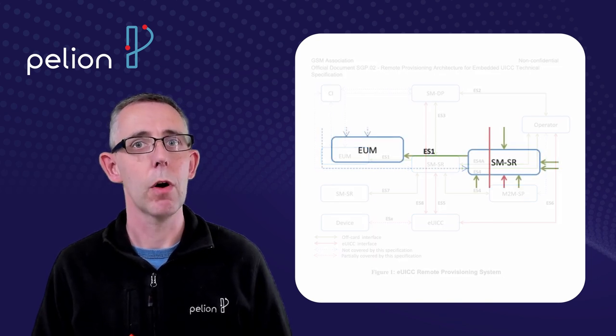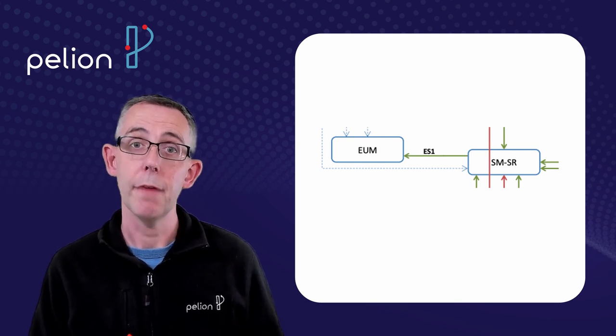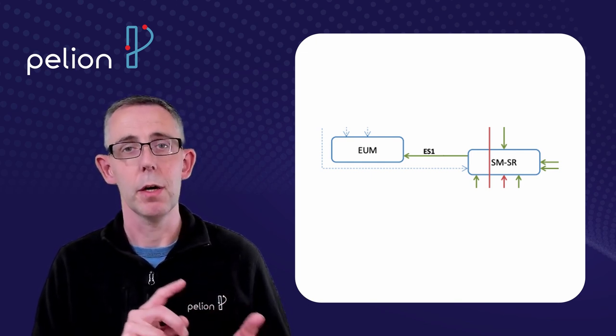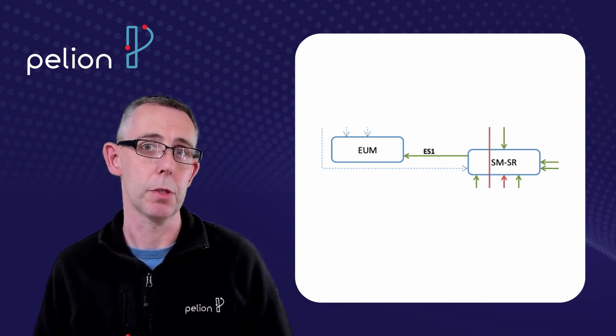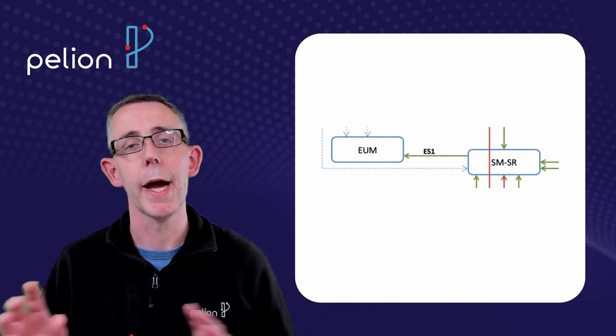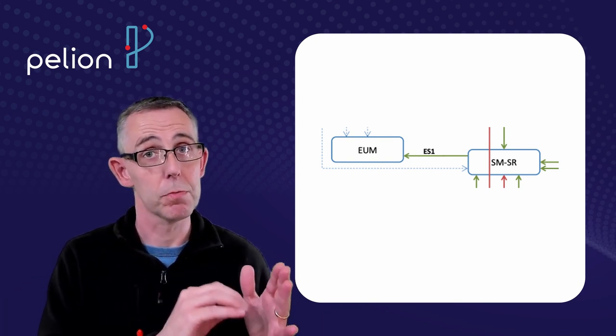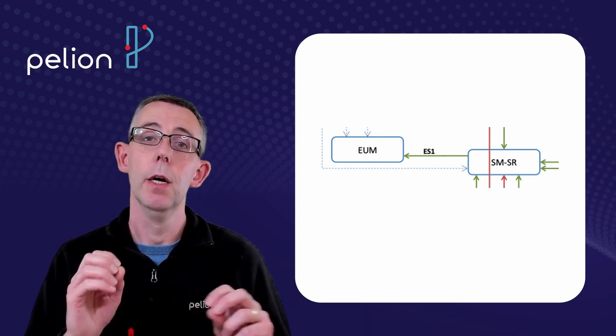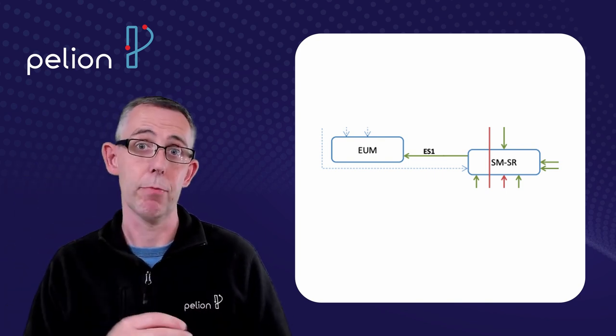So you'll see that over on the far side of the diagram to the left hand side there is an EUM, that's the EUICC unit manufacturer, a diagram into the secure routing subscription manager block and that's where we start to tie together this is a genuine physical device card or eSIM that is valid to download a profile from the data preparation section.